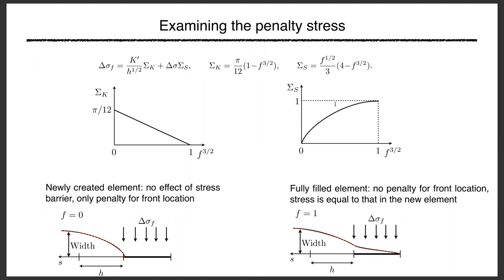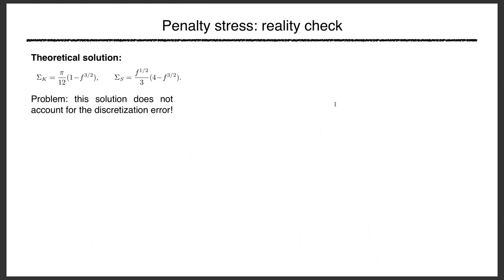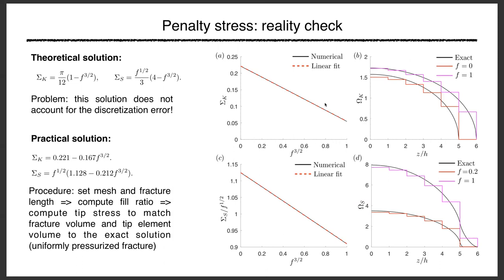These theoretical expressions don't account for discretization error, which is significant with just two tip elements. So I solved a similar problem numerically using displacement discontinuity method and extracted the functions numerically. The procedure: set your mesh, choose a fracture length to determine the fill ratio, use the exact analytic solution for a uniformly pressurized fracture, and numerically compute the penalty magnitude to match both tip element volume and global fracture volume, then fit a line.